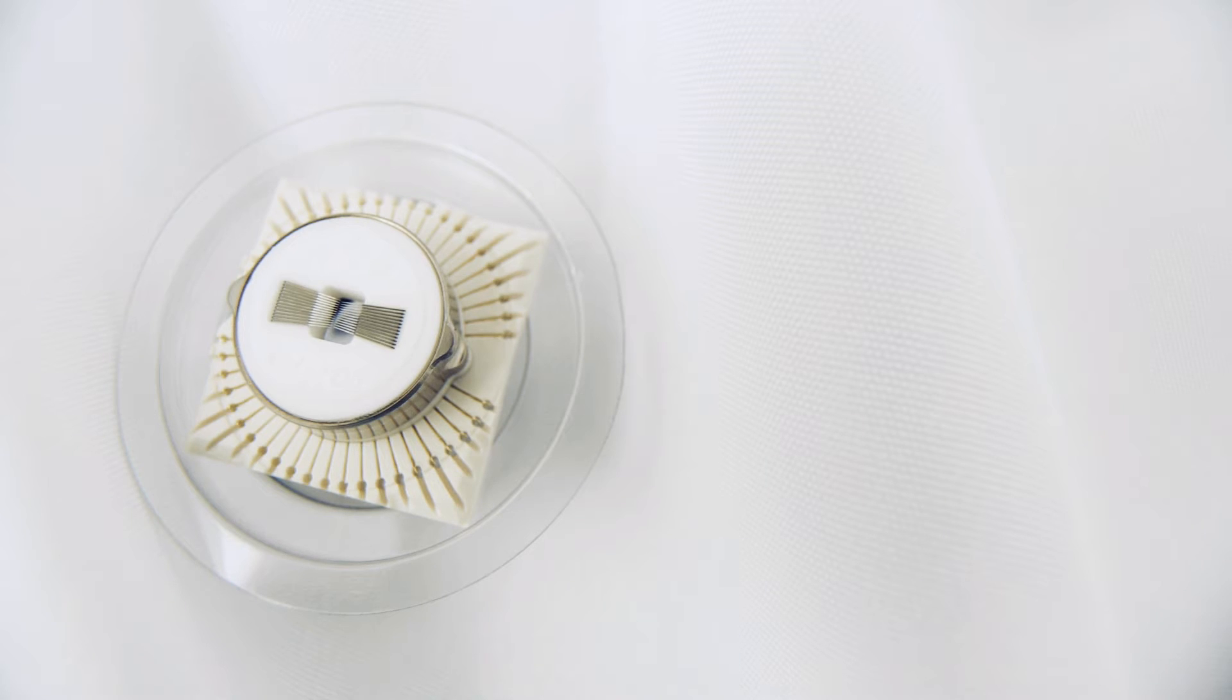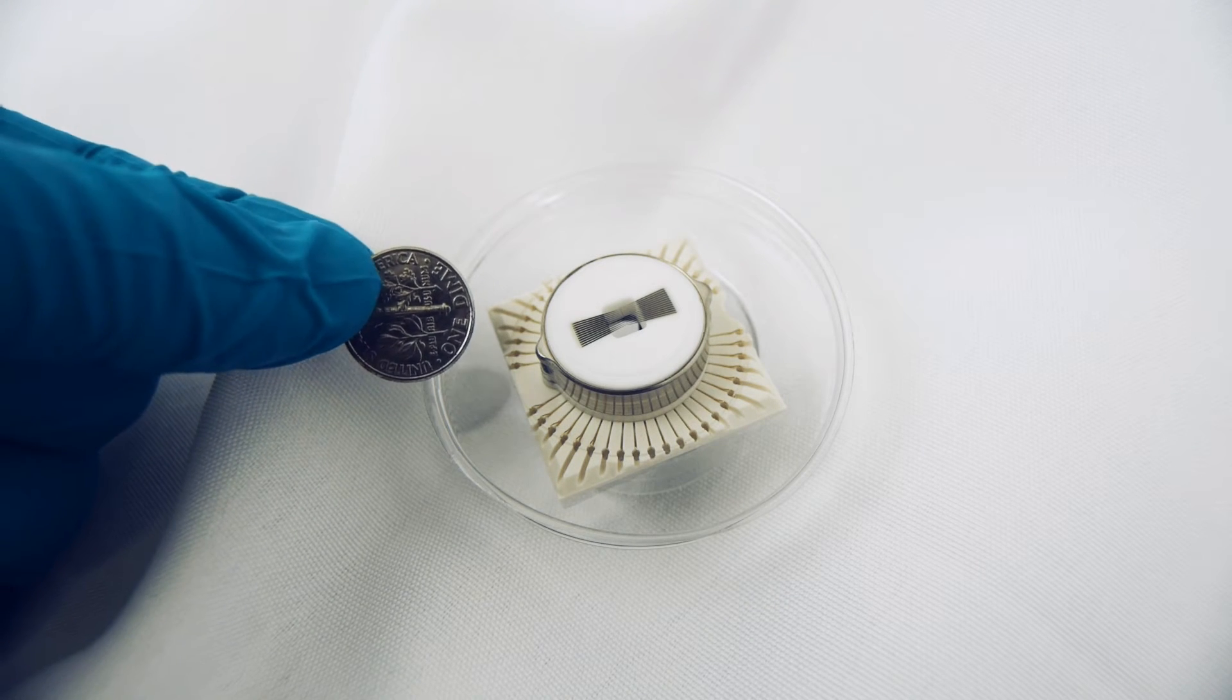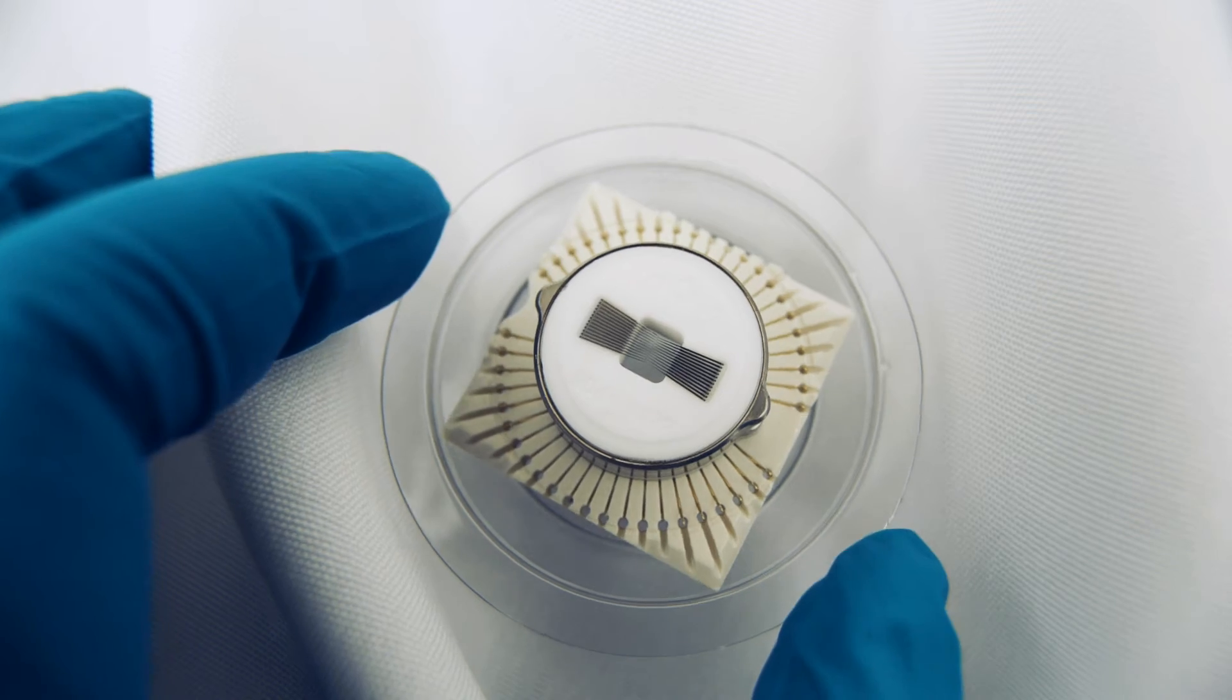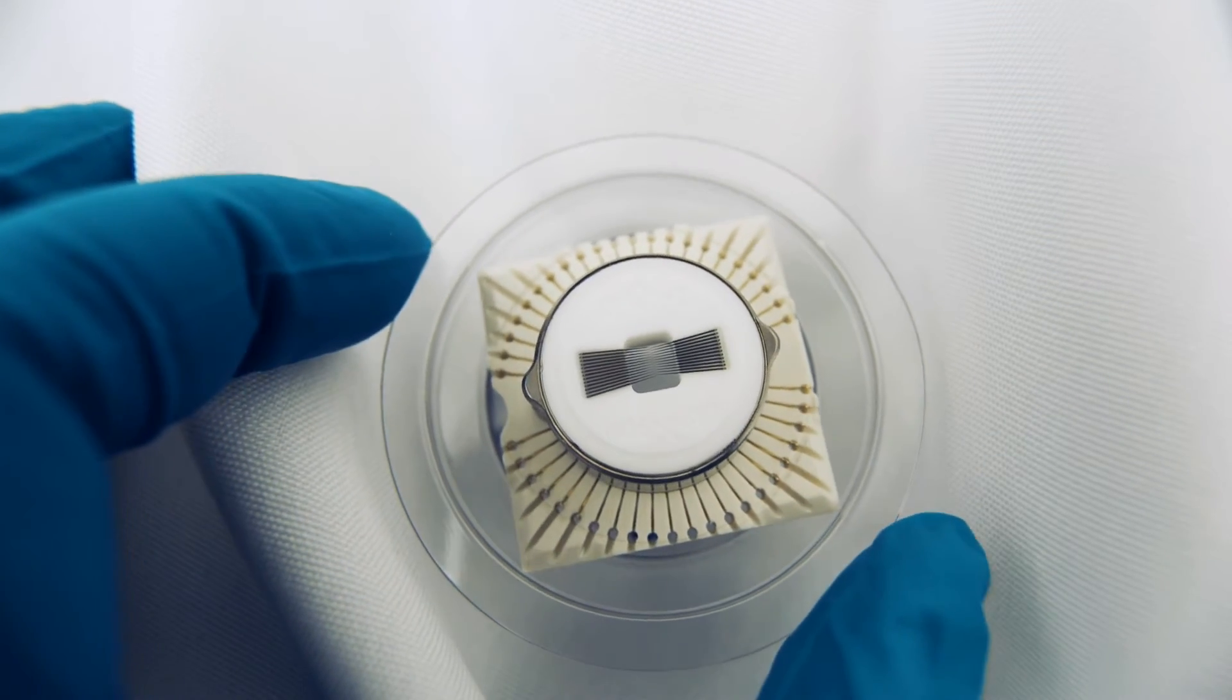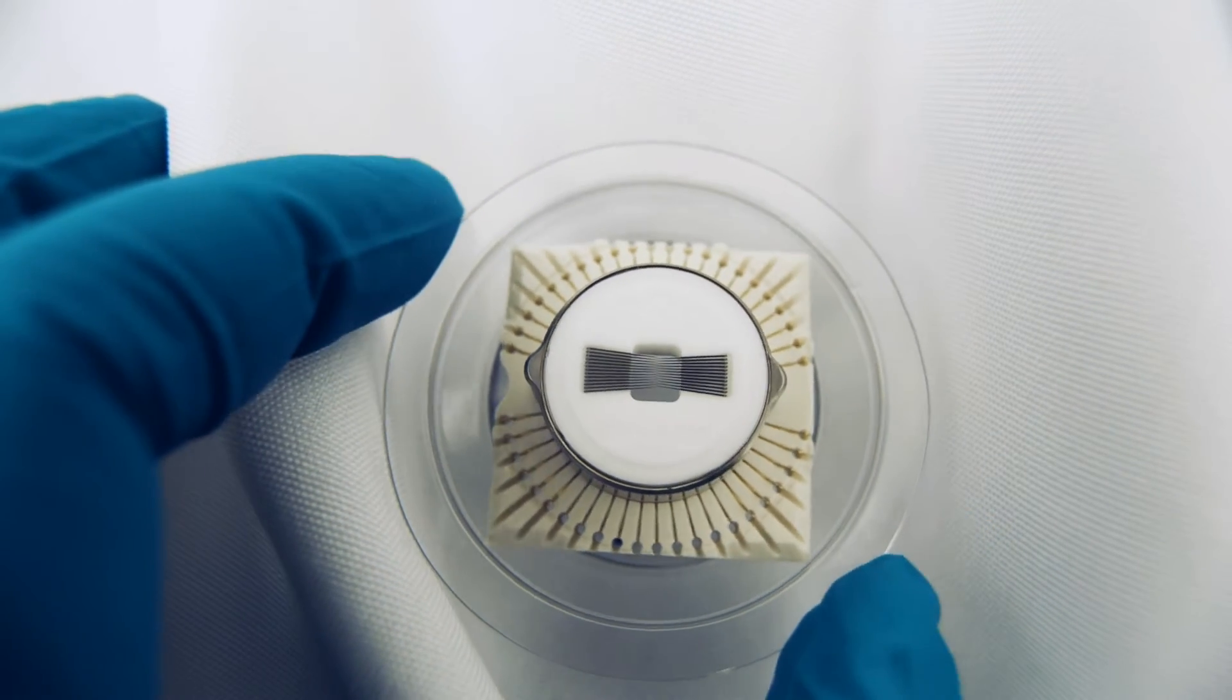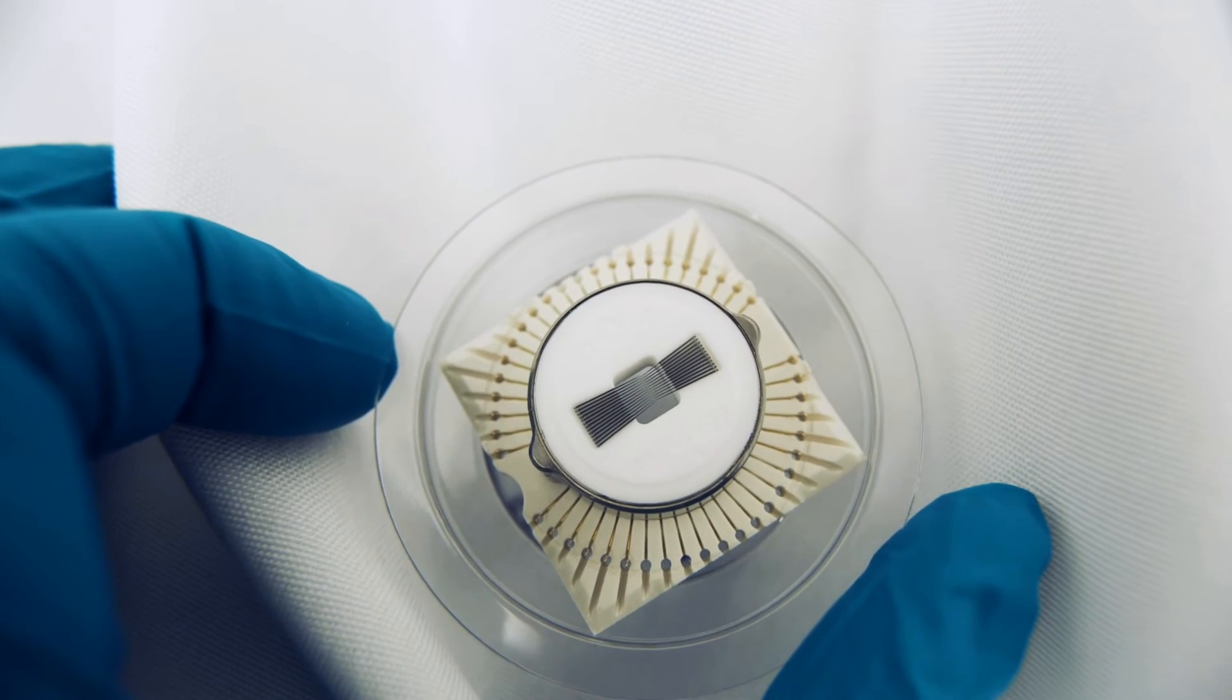The VC20 can be outfitted with up to 48 probes, despite being the diameter of a coin. It can operate in temperatures from negative 65 to 200 degrees Celsius, has leakage as low as 5 femtoamps per volt, and probes can be pitched to nearly vertical to minimize scrub length.